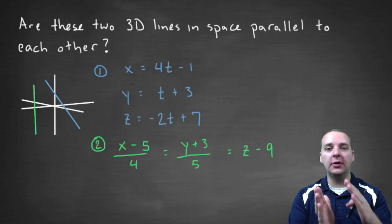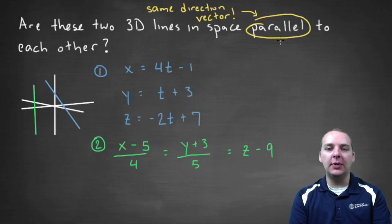The vectors, the direction vectors, have to be pointing in the same direction. So that's the meaning of parallel lines when you're talking about lines in space. So actually I should probably change this to say not necessarily the same direction vector, but where one direction vector is at least just a scalar multiple of the other one.